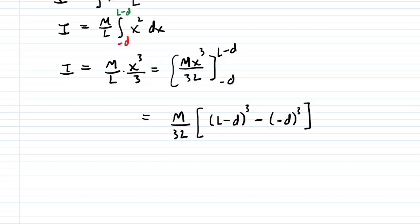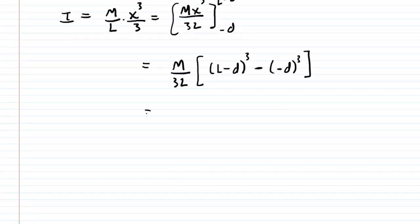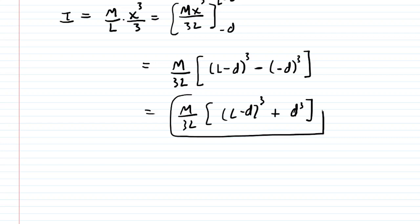Negative d cubed is negative d cubed. So we could actually rewrite this as l minus d cubed and then minus and then drop the parentheses and make this a negative d cubed. That looks a little awkward, doesn't it? Because we're subtracting a negative, so we can just change that to a positive. And this is the final expression that would give us the moment of inertia about that axis that was located in the origin.